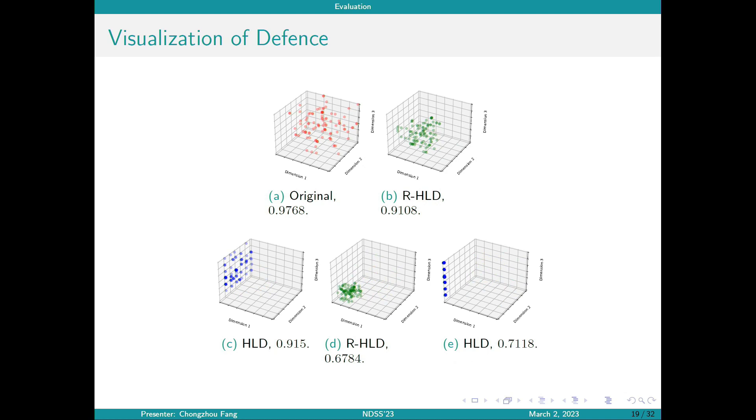Here we show the visualized results of applying our proposed mitigation technologies. Both methods work by compressing the node space and can reduce the heteroscore. A hiding-level defense basically compresses the space by reducing the dimension of the space, while randomly hiding-level defense works by making the servers geometrically closer to each other in the representation space.